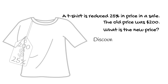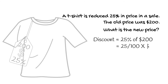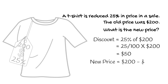The discount is 25% of 200, which equals 25/100 times 200, equals 50. Take the reduction from the original price: 200 minus 50 equals 150.